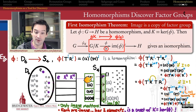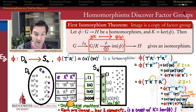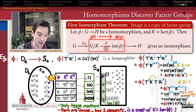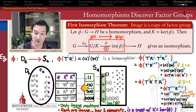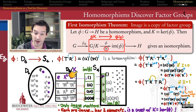The kernel {E, r², r⁴} maps to the identity, the coset t·(kernel) maps to (1 2), the coset r·(kernel) maps to (3 4), and the coset tr·(kernel) maps to (1 2)∘(3 4). This association of cosets of D6 by the kernel of phi with elements of the image of phi is an isomorphism — it's the hidden isomorphism inside our homomorphism.